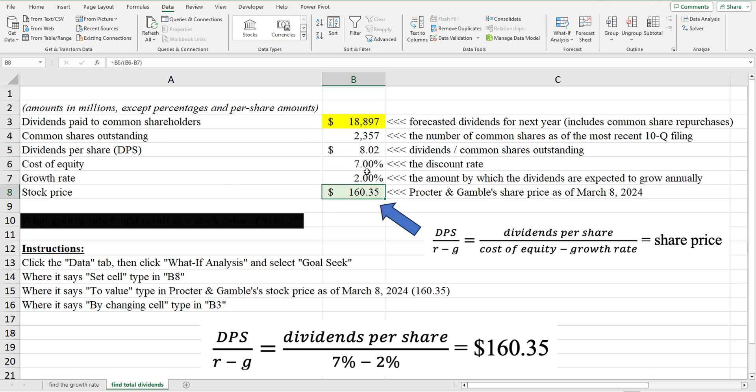if the cost of equity for Procter & Gamble is 7%, and if the growth rate for the dividends is expected to be 2% every year, then it must be that Procter & Gamble is expected to have $8.02 of dividends per common share next year to arrive at this share price. So we have basically backed out.